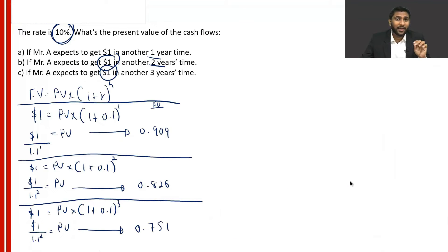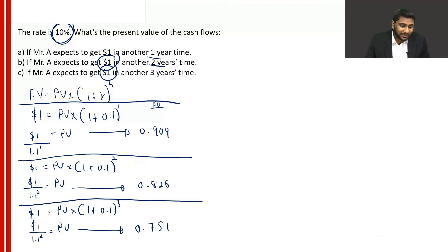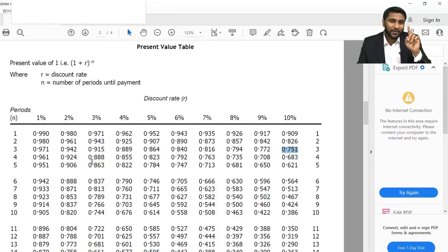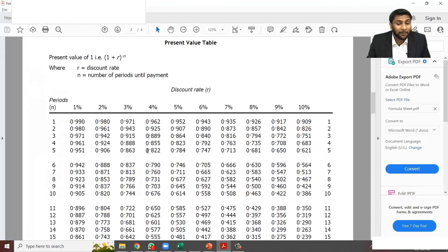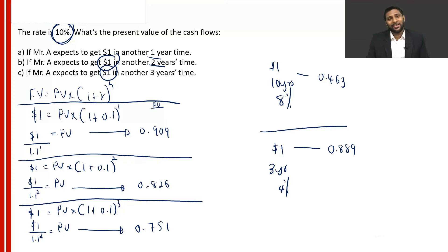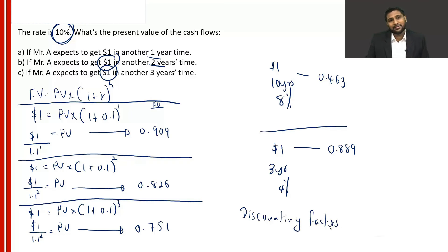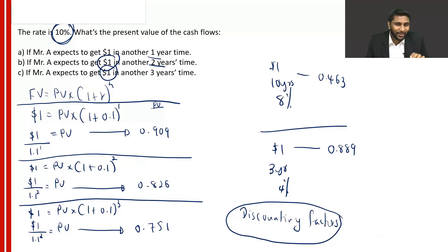So from this, what you have to understand is what values are given in the present value table. Here what we calculated was: if you are getting $1 after a year at a rate of 10%, what is today's value of that $1? In the present value table, you have today's value of $1 at different interest rates and if you are getting it after different years. We will give a name to these three-decimal-place numbers — we call them discounting factors. A discounting factor is simply the today's value, or present value, of $1.